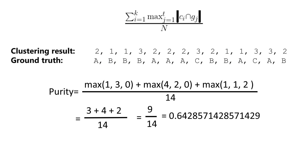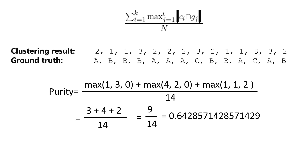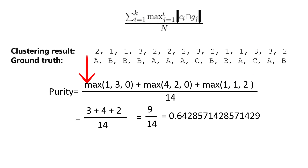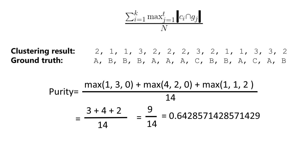Similarly, we find the intersections between algorithmic cluster 2 and each ground truth cluster, and between cluster 3 and each ground truth cluster. Taking the max for each algorithmic cluster, we have 3 plus 4 plus 2 — the numerator is 9. The denominator is 14 total data points. Therefore, the purity of this clustering outcome is 9 divided by 14, which equals 0.642857.